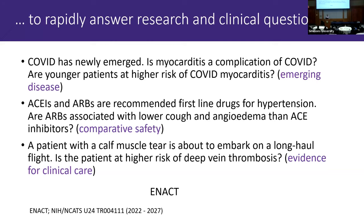There's also a whole set of comparative safety questions. Both ACE inhibitors and ARBs are recommended as first-line agents for treating hypertension. One question that has come up, especially with Southeast Asian and South Asian populations, is that they tend to have a much higher rate of side effects with ACE inhibitors — especially nocturnal cough. People ran queries on the network to figure out whether ACE inhibitors really do have a higher rate of side effects for this particular subpopulation.